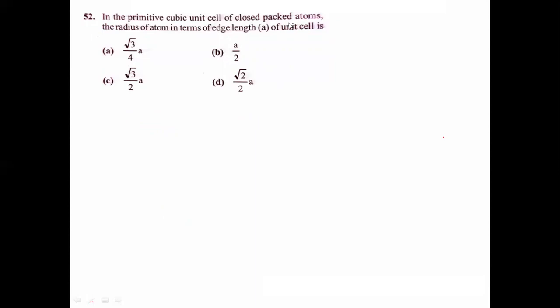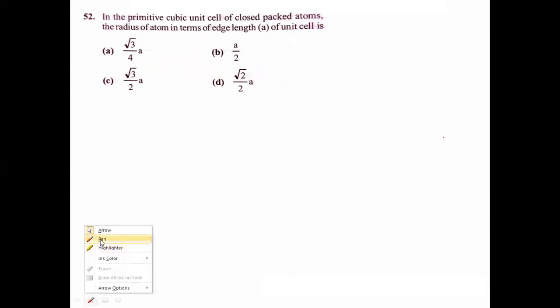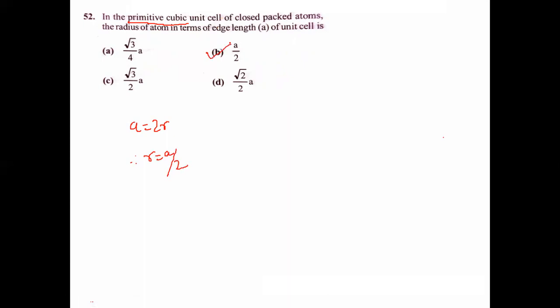In primitive cubic unit cell of close-packed atoms, the radius of atom in terms of edge length A: for simple cube, A = 2R, so R = A/2. Answer is B option.